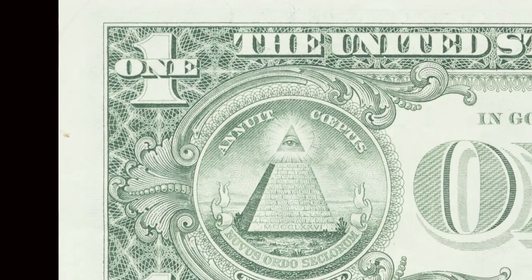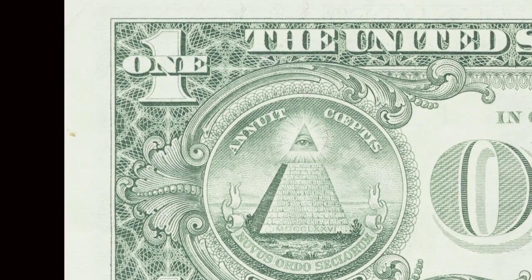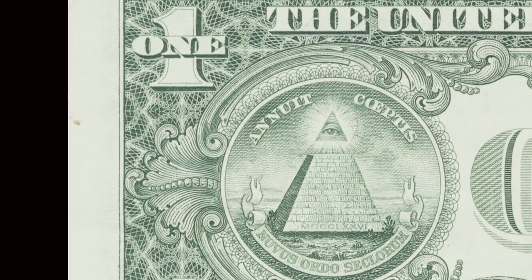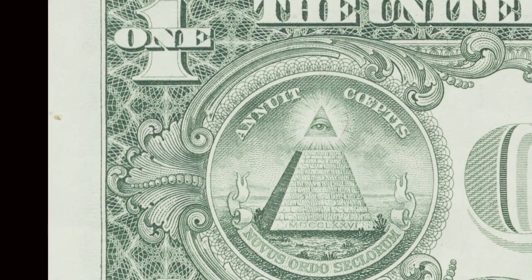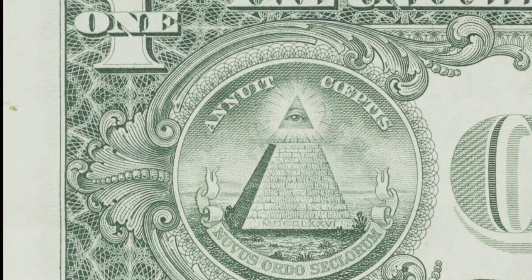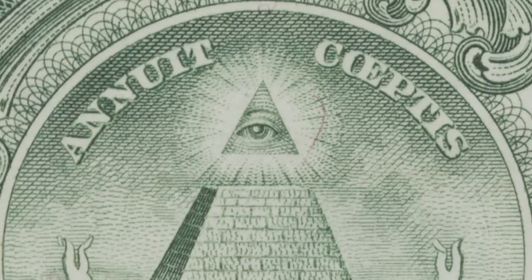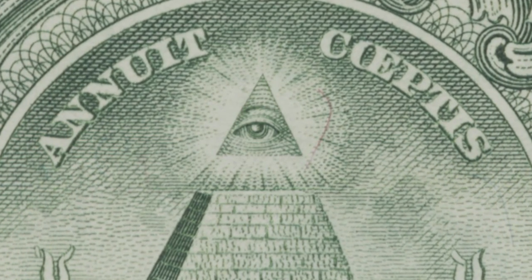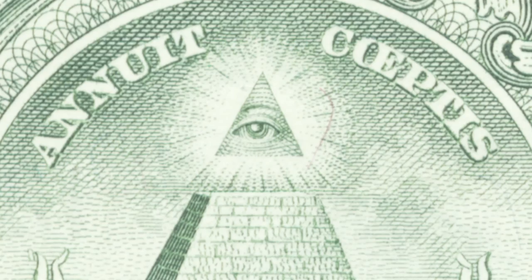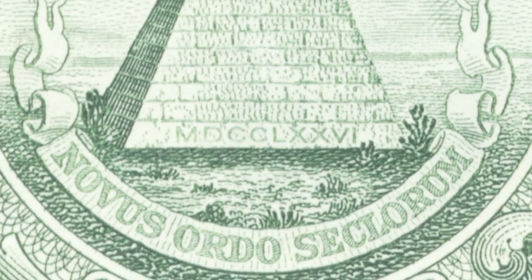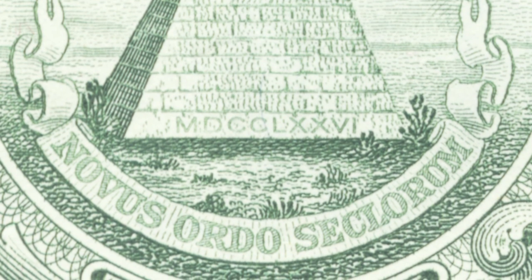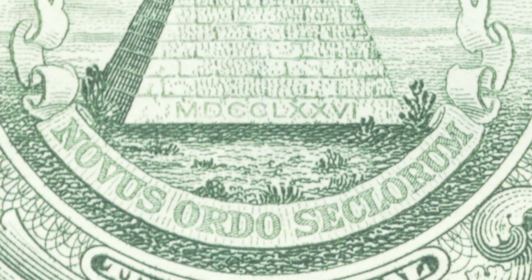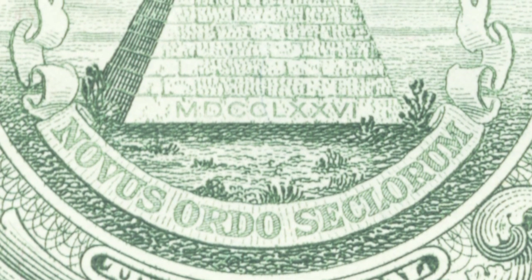The left side features a pyramid. The shape is supposed to represent permanence and strength. You'll notice it's unfinished, to show that we are still growing as a country. The eye on top, also called the Eye of Providence, illustrates the spiritual over the material. And just underneath, in Latin again, 'Novus Ordo Seclorum,' which means 'a new order of the ages.'